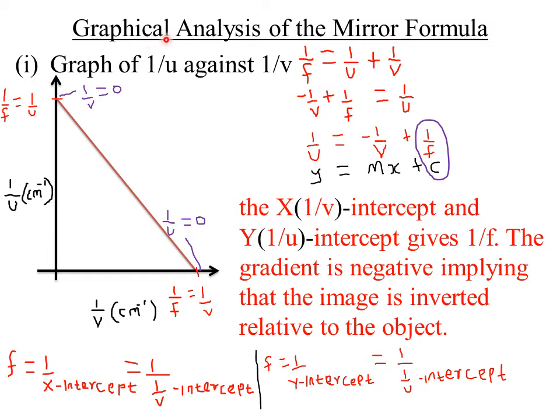Today we'll be looking at graphical analysis of the mirror formula. Remember, the mirror formula states that the reciprocal of focal length must be equal to the sum of the reciprocal of object distance and the image distance.